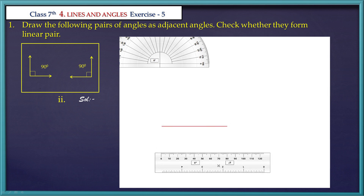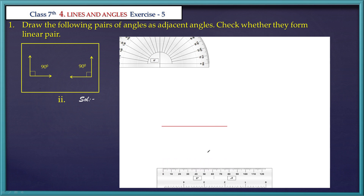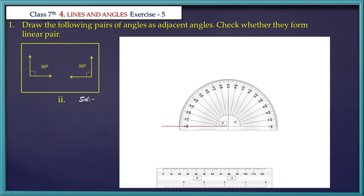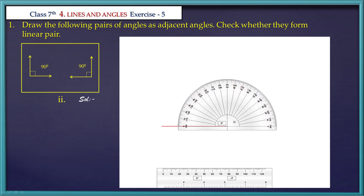Then we will place the protractor. The protractor midpoint is at the right end of the line segment. Then we will draw the line segment to mark the alignment. Now let's measure 90 degrees and we will measure it as a linear pair.